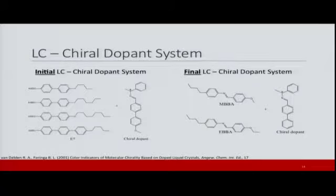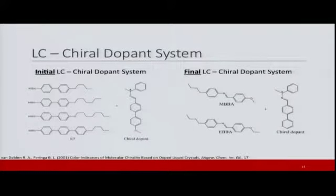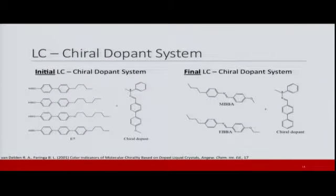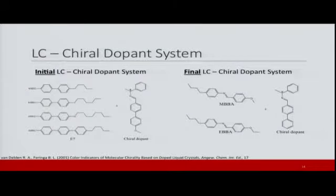We were inspired by Feringa's work and decided to adopt and modify his system for our experiment design. When designing an experiment, one should really think about having all materials inexpensive or easily synthesized and commercially available, because this lab will be done with many students. We got rid of the methoxy group on the chiral dopant because the aldehyde used to synthesize it is more expensive when it contains that methoxy group. Also, instead of E7, we switched to a mixture of MBBA and EBBA liquid crystals.